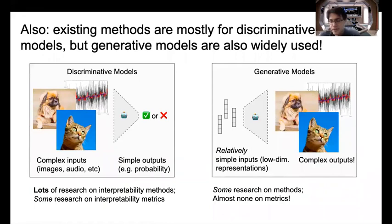Another issue here is that most prior ML interpretability research focuses on classifiers, regressors, or more generally what are called discriminative models. Discriminative models are characterized by having relatively complicated high-dimensional inputs, like images, time series, text, or tabular data with lots of features, and relatively simple outputs, often just a single probability.